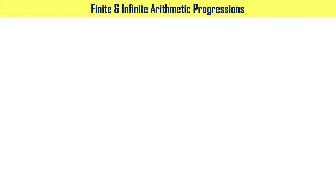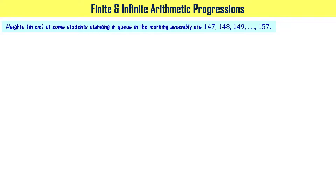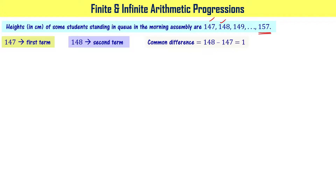Now let us discuss finite and infinite arithmetic progressions. The heights of some students standing in a queue in the morning assembly are 147, 148, 149, 150, and so on up to 157. This is an arithmetic progression where 147 is the first term and the common difference between consecutive terms is 1. The common difference is the same between every pair of consecutive terms.